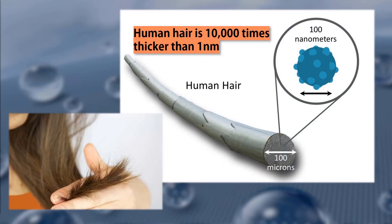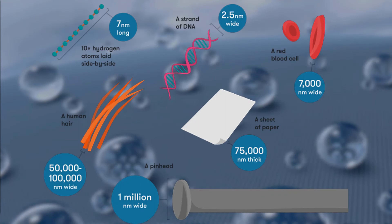The thickness of human hair is somewhere around 50 to 100 micrometers. This means that 100 nanometers, the upper limit of nanoscale, is around a thousand times smaller than the human hair thickness. 10 hydrogen atoms laid side by side reach 7 nanometers long. A DNA strand has a width of 2 to 3 nanometers. Even a red blood cell, which may seem very small, has a width of about 7,000 nanometers.